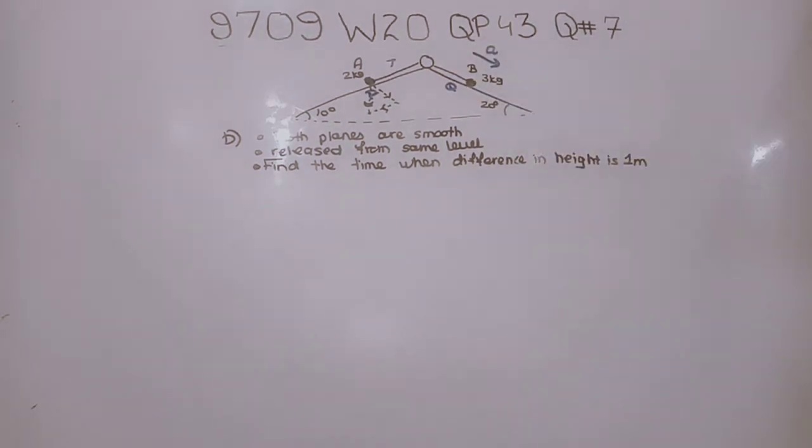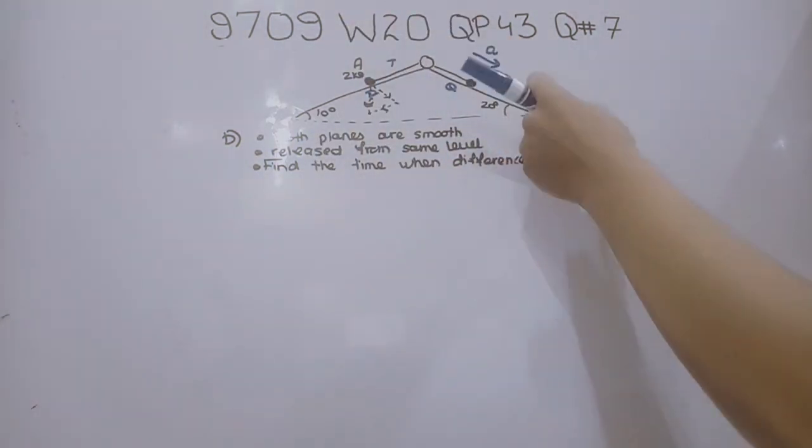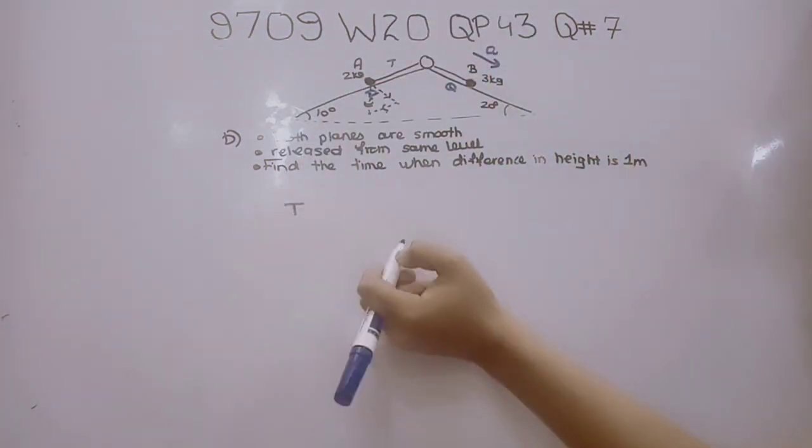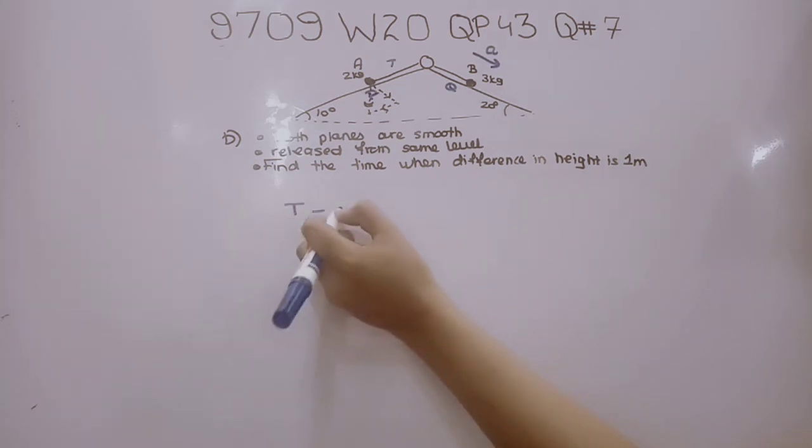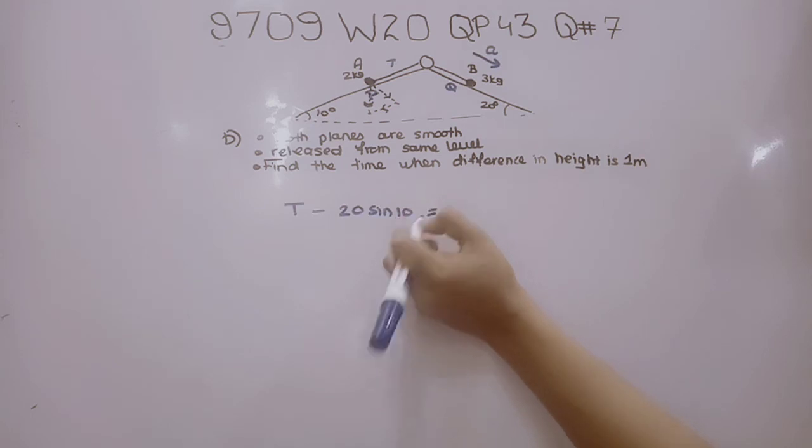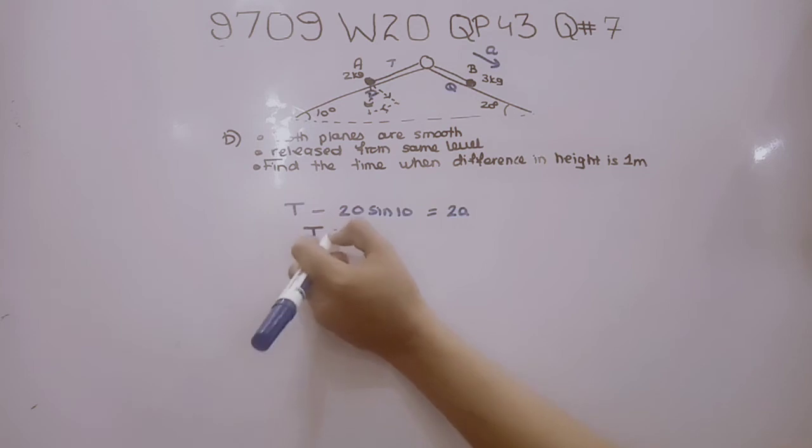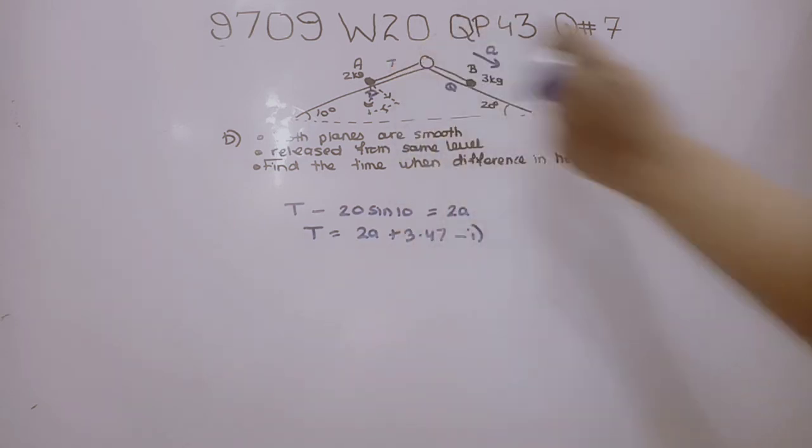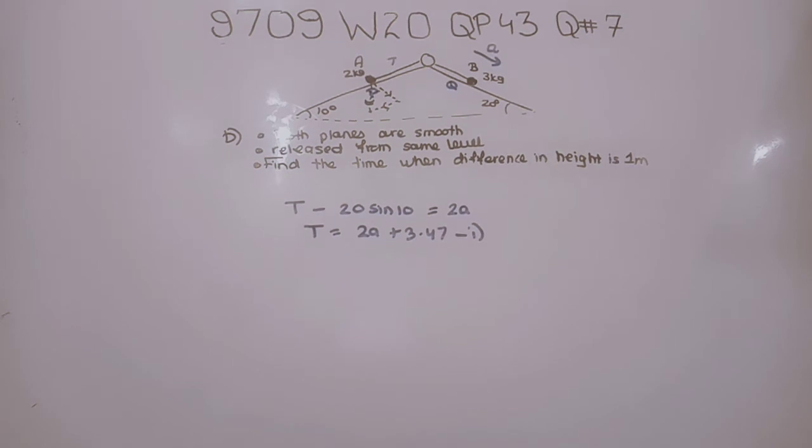For particle A, the tension minus 20 sin 10 equals mass times acceleration, so T minus 20 sin 10 equals 2A. Therefore T equals 2A plus 3.47. That's our equation from particle A.